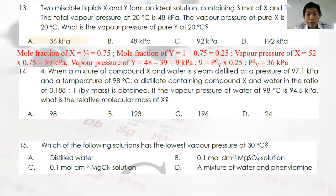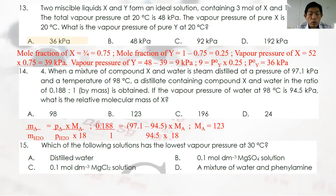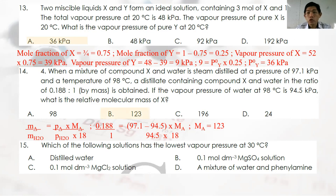Question 14: When compound X and water are steam distilled at 97.1 kPa and 98°C, the distillate contains X and water in ratio 0.188:1 by mass. Vapor pressure of water at 98°C is 94.5 kPa. The formula to use is: mass of A over mass of H₂O equals vapor pressure of A over vapor pressure of H₂O multiplied by the molecular mass ratio. Note: this question is from the old syllabus and is out of the current STPM syllabus.